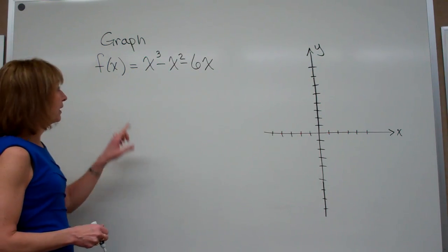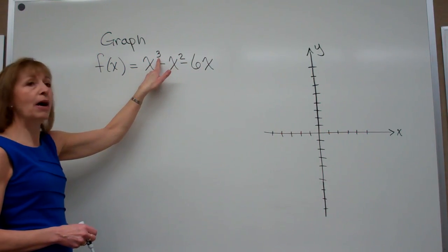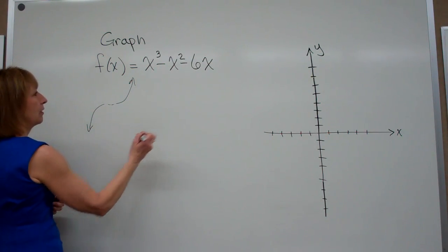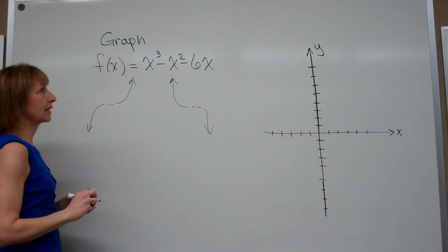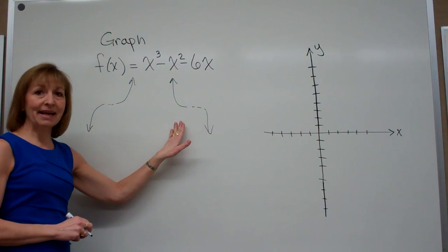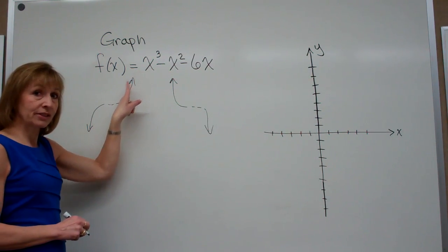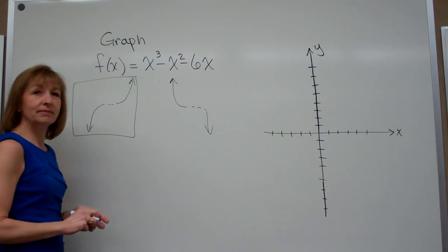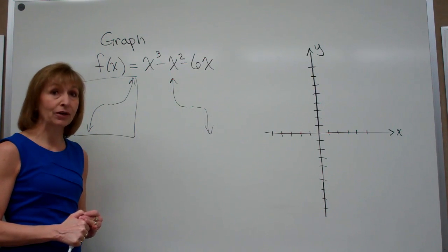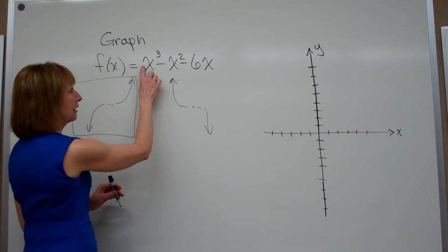So first of all, let's look at end behavior. When I look at the polynomial function, the highest degree on my exponents is a power of 3. When your highest degree is odd, the end behavior either looks like this or like this. And 3 is an odd number, so I know I have either of those two cases for my end behavior. Now to tell which of these cases I have, I look at the coefficient in front of the highest degree term. If my coefficient is positive, like in our situation here, the end behavior is this case. If the coefficient is negative, it would be that case. So we have this for ours because our highest degree is odd and our lead coefficient is positive.